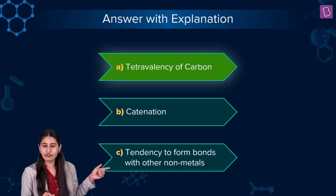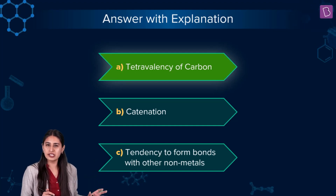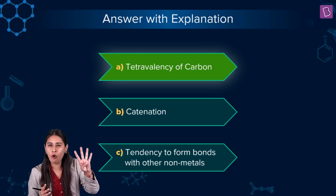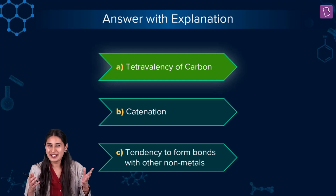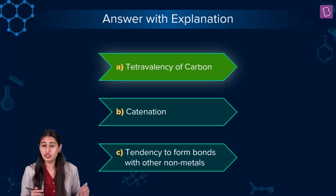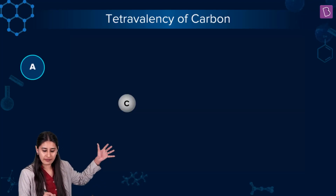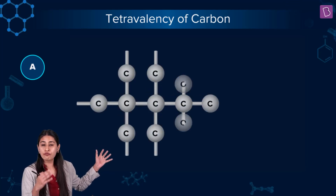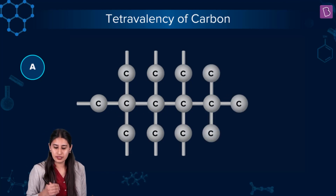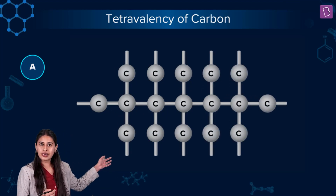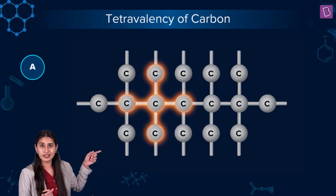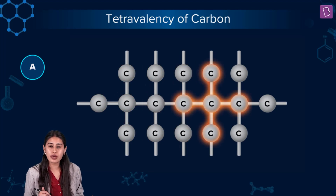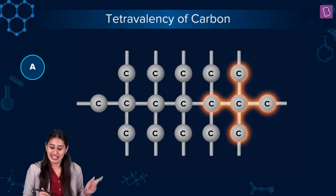Tetravalency of carbon — 'tetra' means four, so tetravalency means the ability of carbon to form four bonds. You can see it forming four bonds right here. This property is very, very important in explaining the diversity of organic compounds.